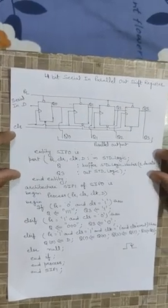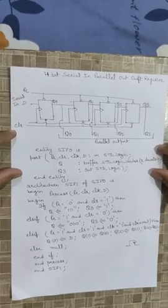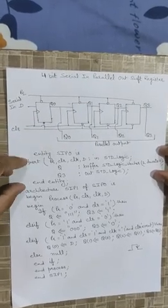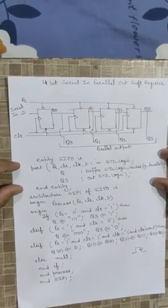Now the next program in shift register is 4-bit serial in parallel out shift register. Here we have taken 4 flip-flops FF1 to FF4 and all of these are simultaneously connected with preset, clear and clock.